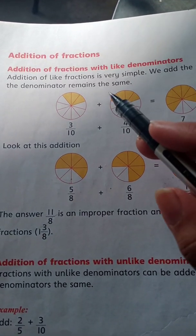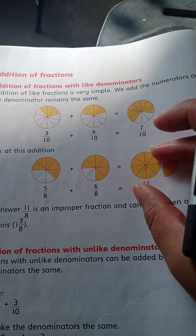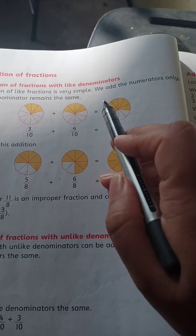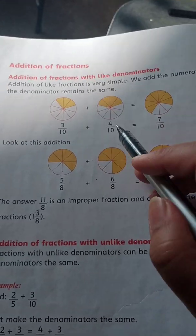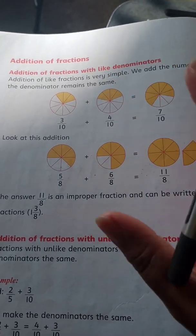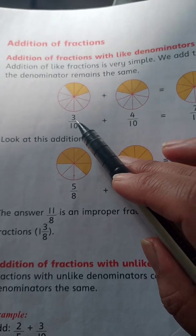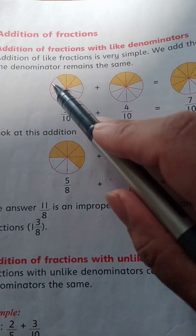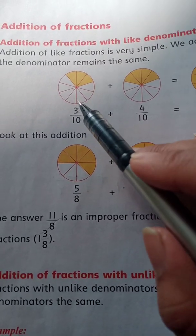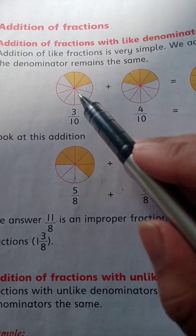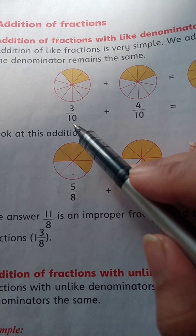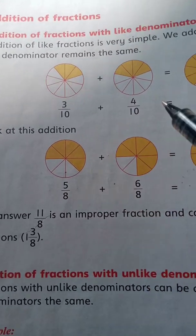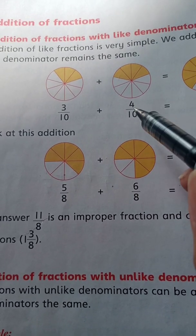Like fractions ki additions easy hain — hum sirf numerators ko add kar lete hain aur denominator wohi rehta hai. Yahan humare paas hai 3 by 10 plus 4 by 10. In ko figure se show kiya hua hai: total parts us round shape mein 10 honge, aur shaded parts 3 honge. Total parts denominator mein likhte hain aur shaded parts numerator mein likhte hain.